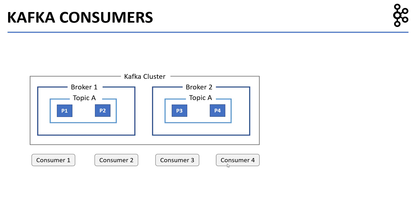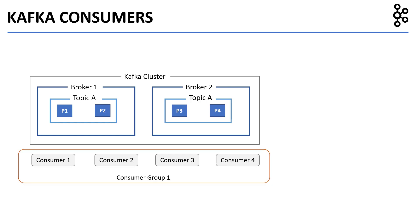Now let's slightly modify our example. Let's say all four consumers now belong to the same consumer group. In that case, each consumer receives data from a separate partition: consumer 1 receives data from partition 1, consumer 2 from partition 2, consumer 3 from partition 3, and consumer 4 from partition 4.